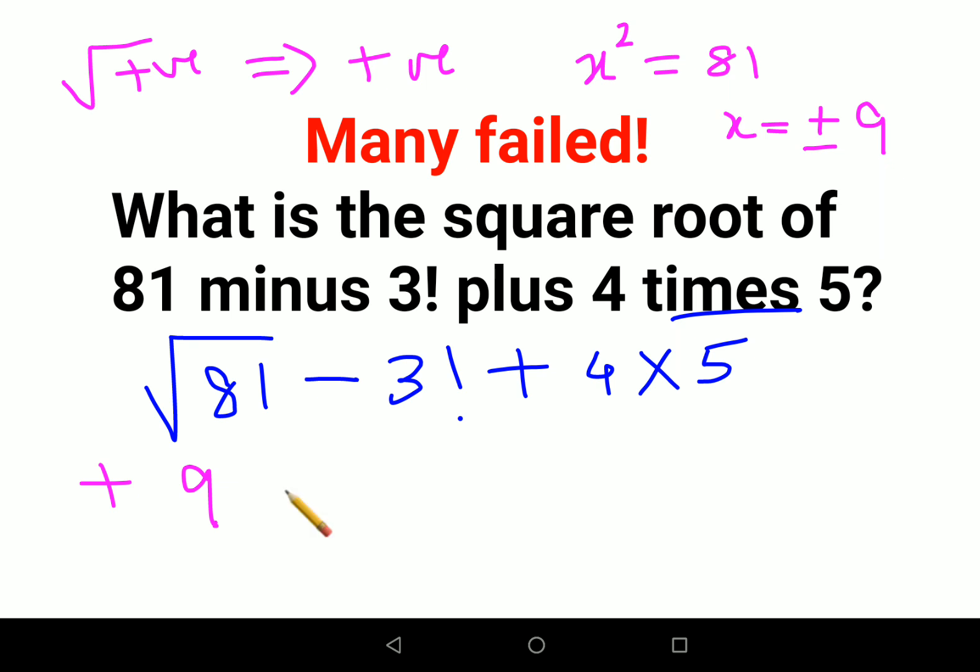Minus 3 factorial. Now remember, whenever you have a number which has a factorial sign ahead of it, you can write it as the product of consecutive numbers in decreasing order, going on up to 1.